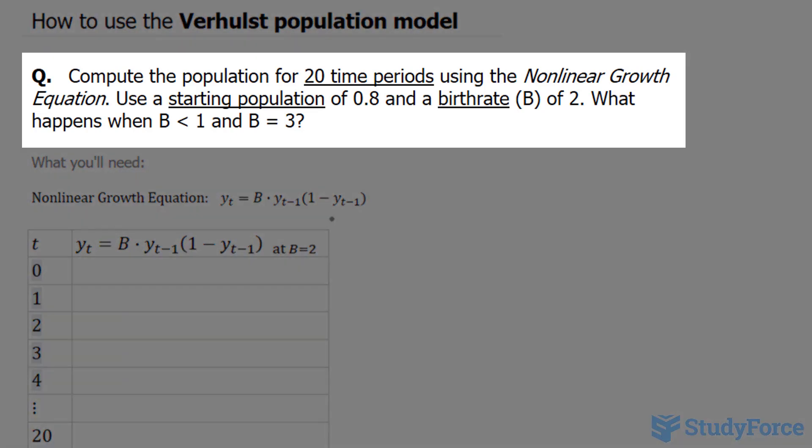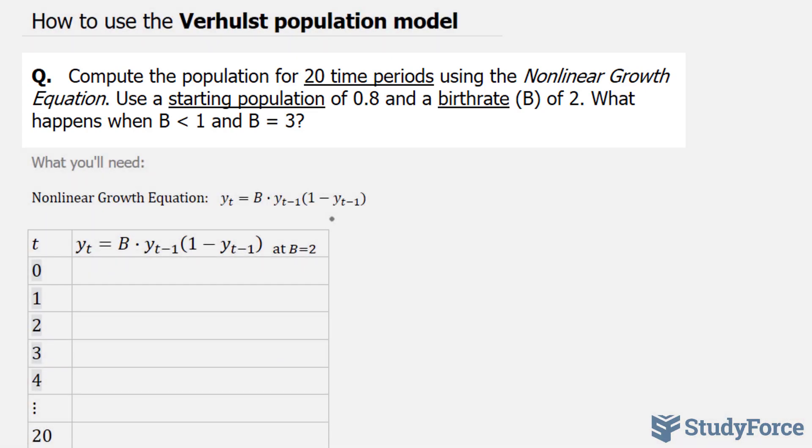The question reads: compute the population for 20 time periods using the nonlinear growth equation. Use a starting population of 0.8 and a birth rate, b, of 2. Also, what happens when b is less than 1 and what happens when b is equal to 3?